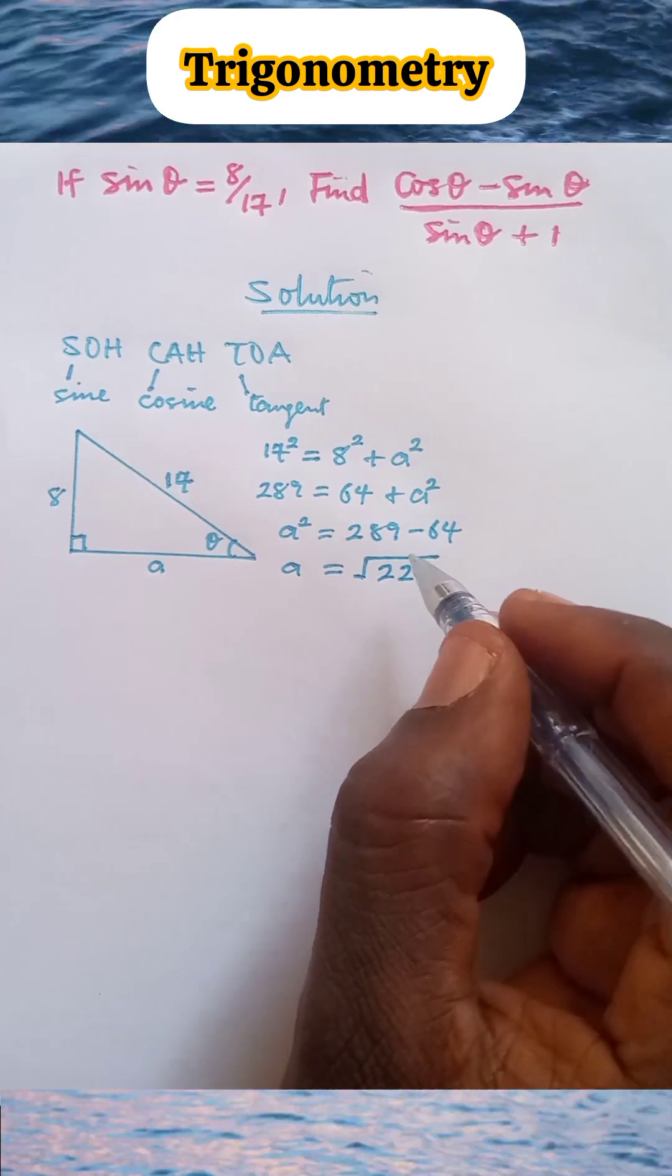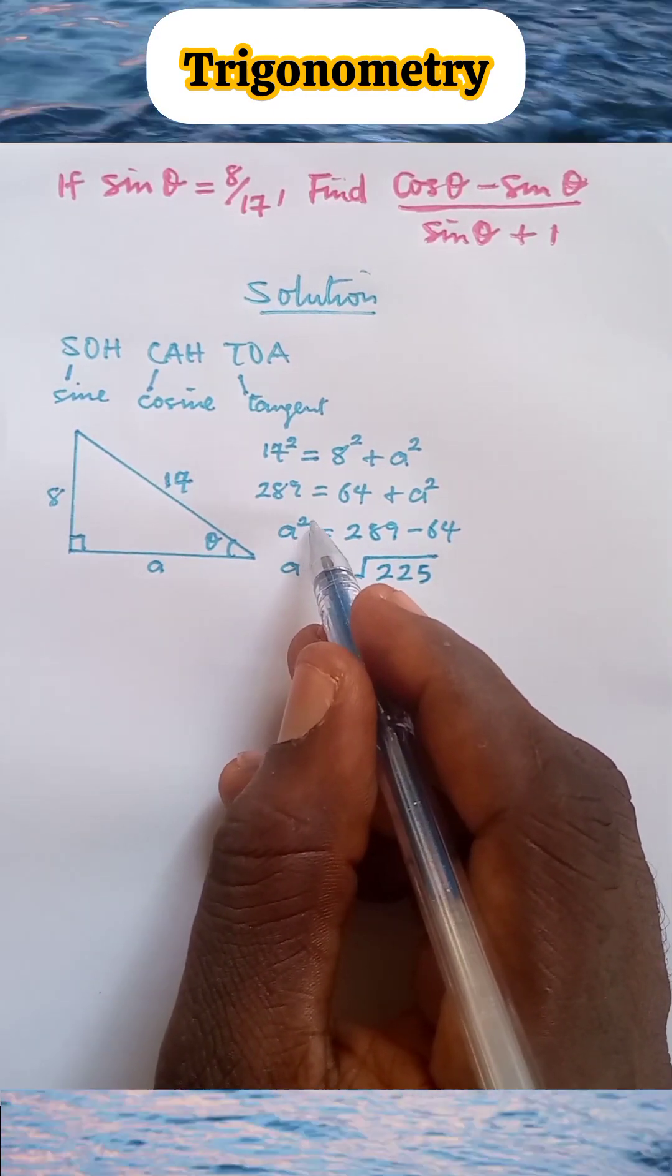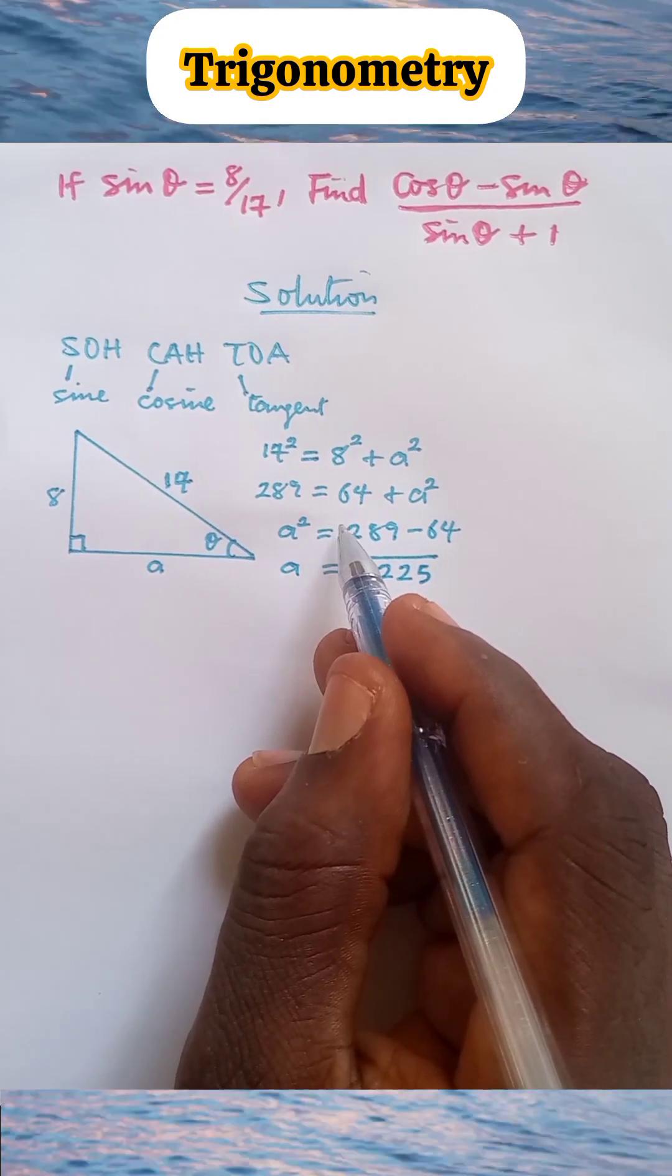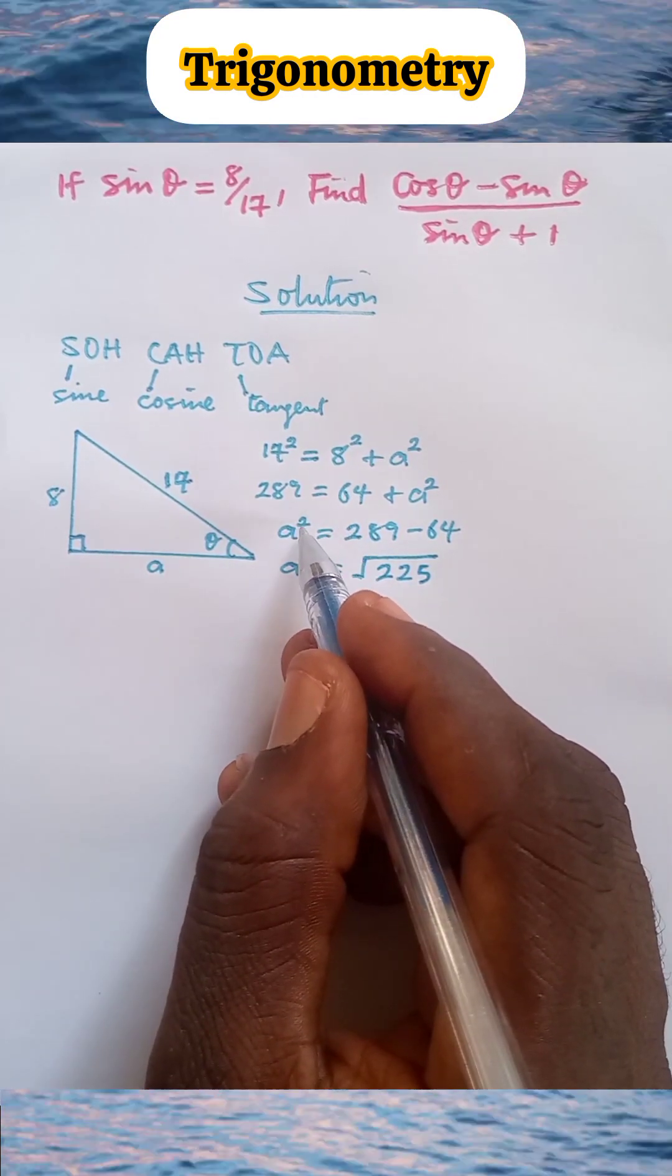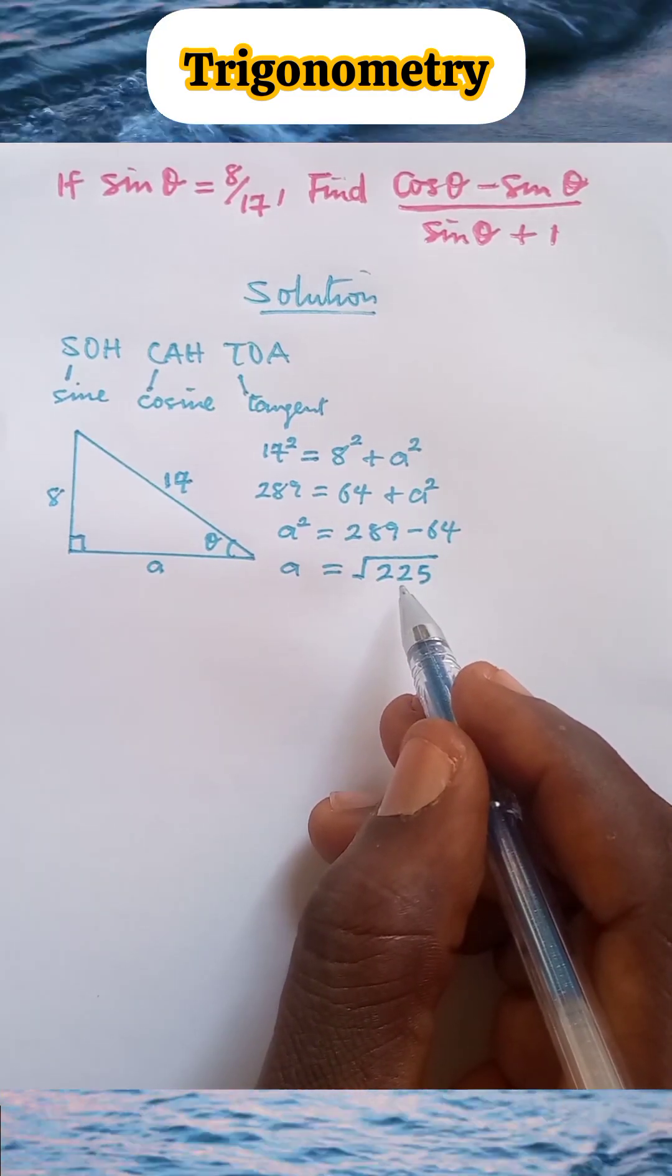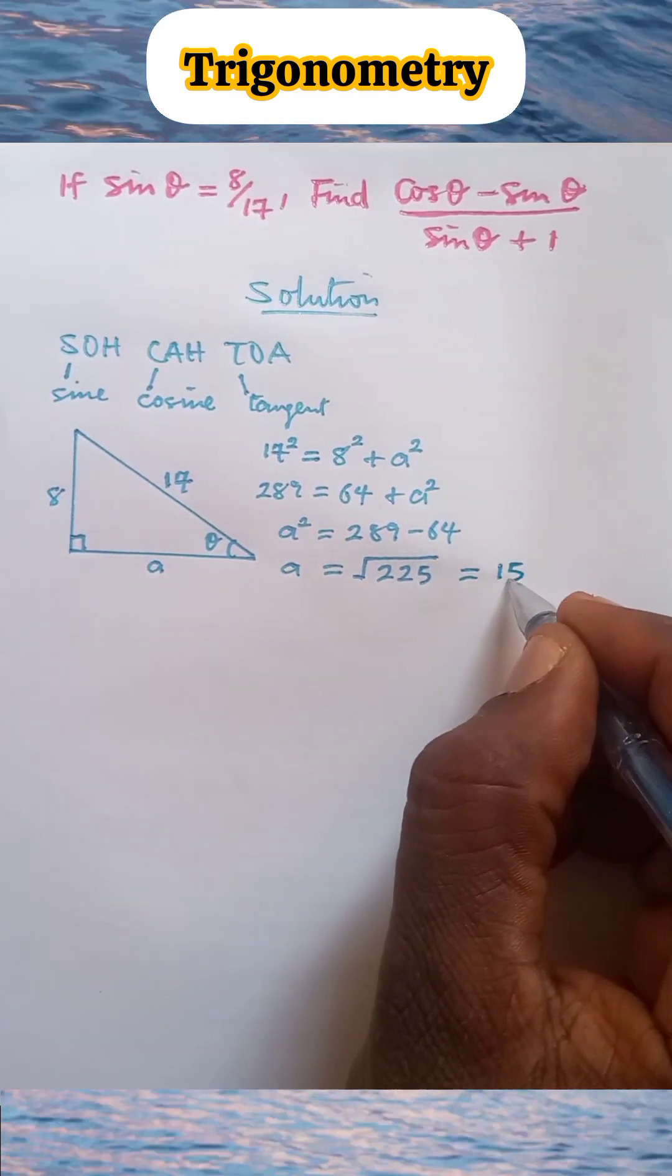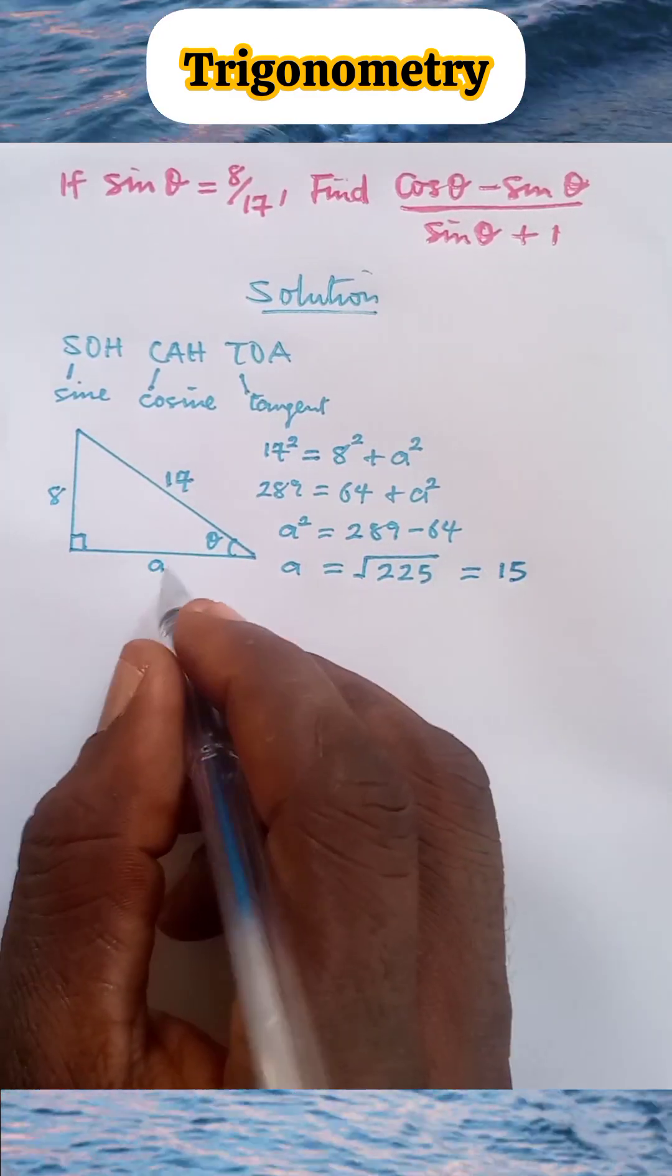For the sake of those that may not understand, we have 2 as exponent. When exponent crosses the sign of equal to, it forms root. So the 2 here, having crossed, has to form square root over 225. That is plus or minus, but here we don't need the minus, so we have √225 = 15. So now we got A to be 15.